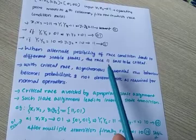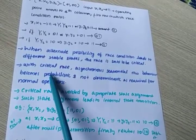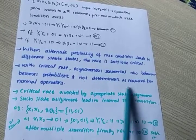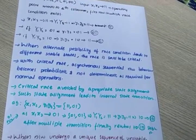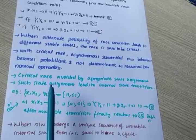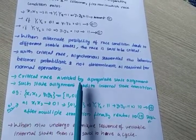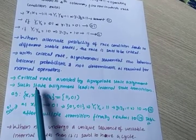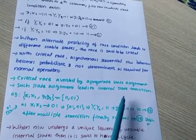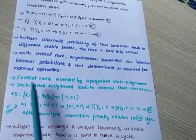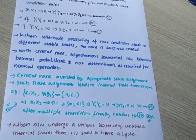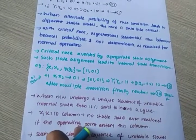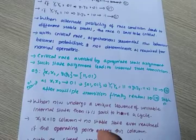With a critical race, a single sequential network's behavior becomes probabilistic and not deterministic, as required for normal operation. Critical races are avoided by appropriate state assignment. Such state assignment leads to internal state transitions that prevent critical races.